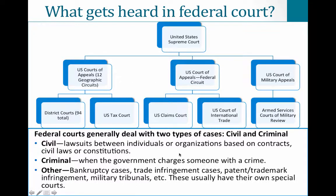Those specialty courts have their own procedures. We will be focusing on the main track, which is the bulk of the cases. Federal courts generally deal with two types of cases: civil and criminal. Civil cases are lawsuits between individuals or organizations based on contracts, civil laws, or constitutions — this is what people mean when they say 'I'm going to sue you.' A criminal case is when the government charges someone with a crime.